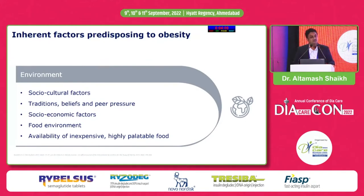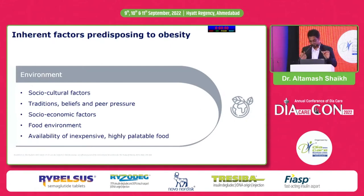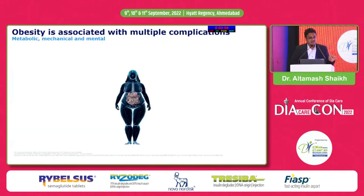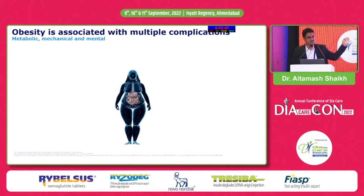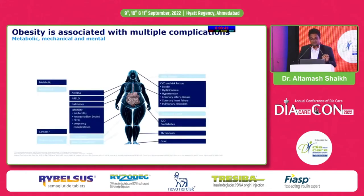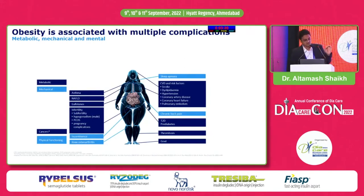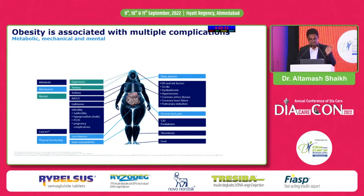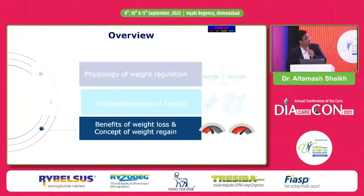Socioeconomic factors and the food environment are very important. What the person next to you is eating influences your plate significantly. The availability of inexpensive, highly palatable food — like the fafra streets of Ahmedabad — is a key driver. Obesity is associated with multiple comorbidities, divided as metabolic (M1), mechanical (M2), mental (M3), and monetary factors (M4).